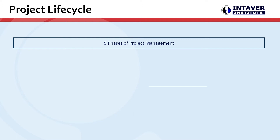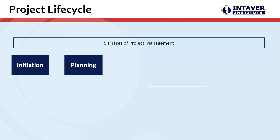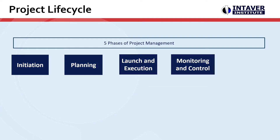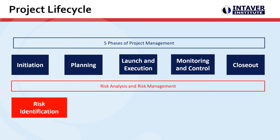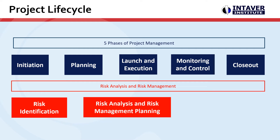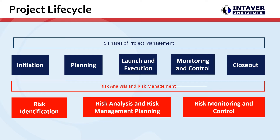There are briefly five phases of project management: initiation, planning, launch and execution, monitoring and control, and closeout. In risk analysis and risk management, we have risk identification, risk analysis and risk management and planning, and risk monitoring and control.